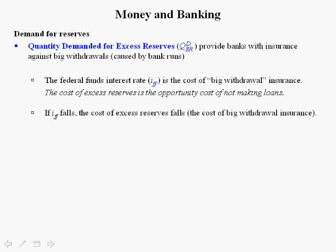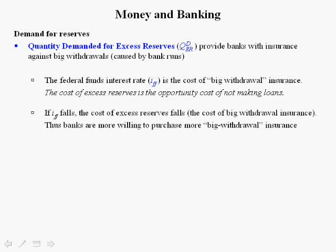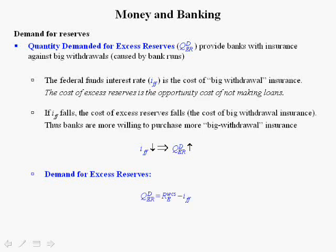If the federal funds rate falls, the cost of excess reserves falls — the premium falls. Thus, banks are more willing to purchase big withdrawal insurance. The smaller the interest rate, the less the opportunity cost of not making loans to banks struggling to meet the reserve requirement, so the more excess reserves a bank will hold, all else constant. When the federal funds rate falls, the quantity demanded for excess reserves rises, suggesting there's a downward-sloping demand curve for excess reserves.